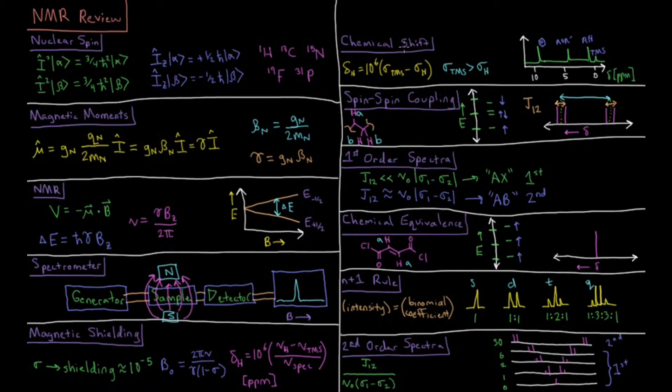Now looking more into that chemical shift, it's about the difference in the magnetic shielding relative to a reference, tetramethylsilane, relative to our given hydrogen atom of whatever molecule we're looking at. So we have a spectrum here where we typically have...